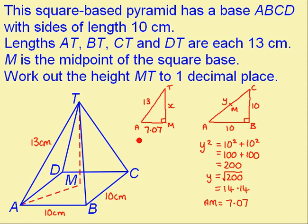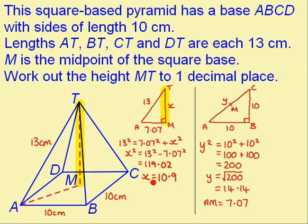Now I can use Pythagoras to find x which is the height of MT that I'm looking for. Pythagoras gives me this which I can now solve to find x. I get this so the final answer to the question is that the height is 10.9cm.